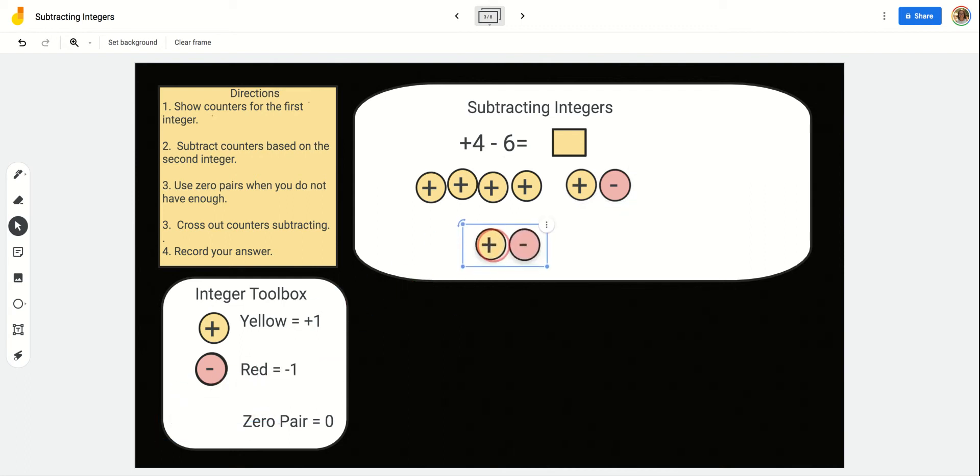So, I'll add 2 of these so that way I have now 6 positives. See? I can take away. I have 1, 2, 3, 4, 5, 6. So, I started with 4. I took away 6 positive. What's left? 2 negative.